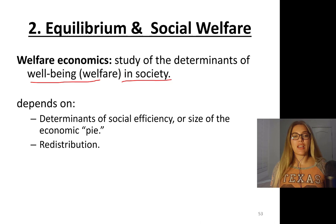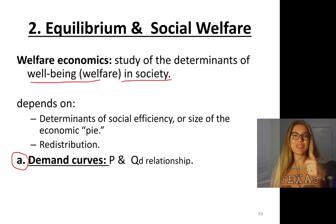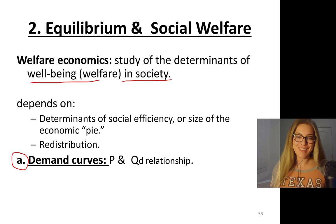It depends on social efficiency — that's the size of the economic pie — but also it depends on redistribution. So demand curves: we need to first talk about demand curves and price elasticity of demand to talk about social welfare, because we need to derive the demand curve, then the supply curve, put them together, find equilibrium, and talk about consumer surplus, producer surplus, economic efficiency, social surplus — that's the size of the pie — and then social welfare.